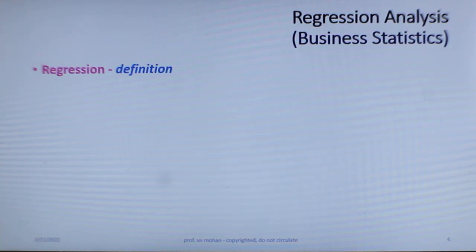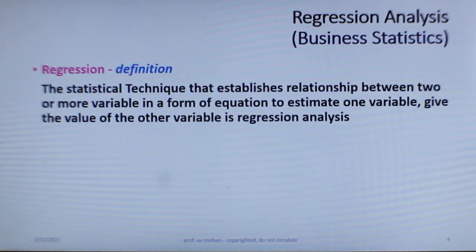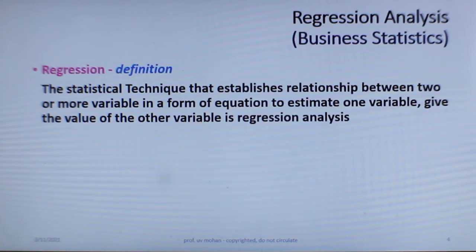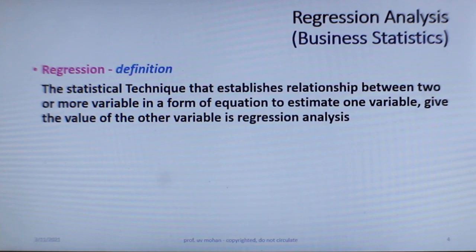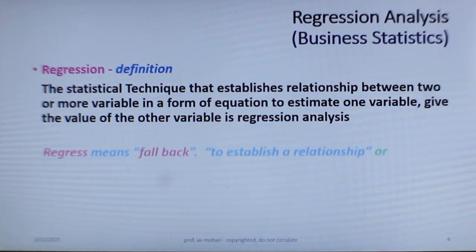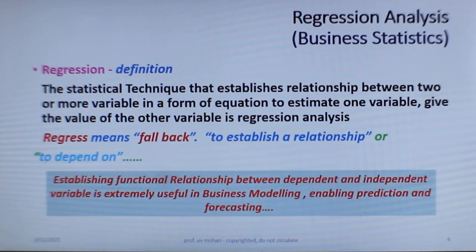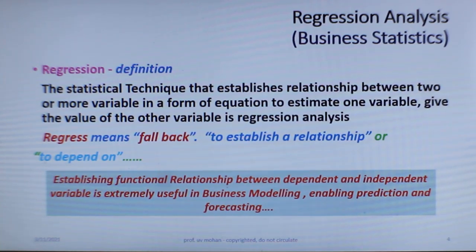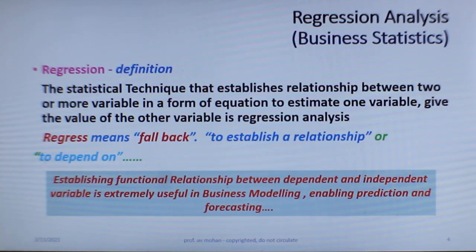A simple and lucid definition of regression: the statistical technique that establishes the relationship between two or more variables in the form of an equation to estimate one variable given the value of other variables is called regression analysis. Regression means to fall back or to establish a relation. Regression is very important in a business environment, especially in decision making, and establishing a functional relationship between the dependent and independent variable is very useful in business modeling.